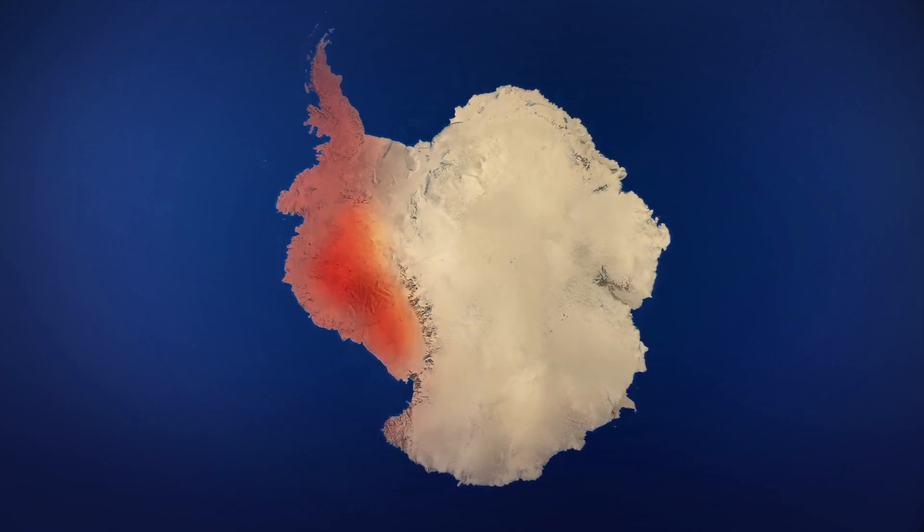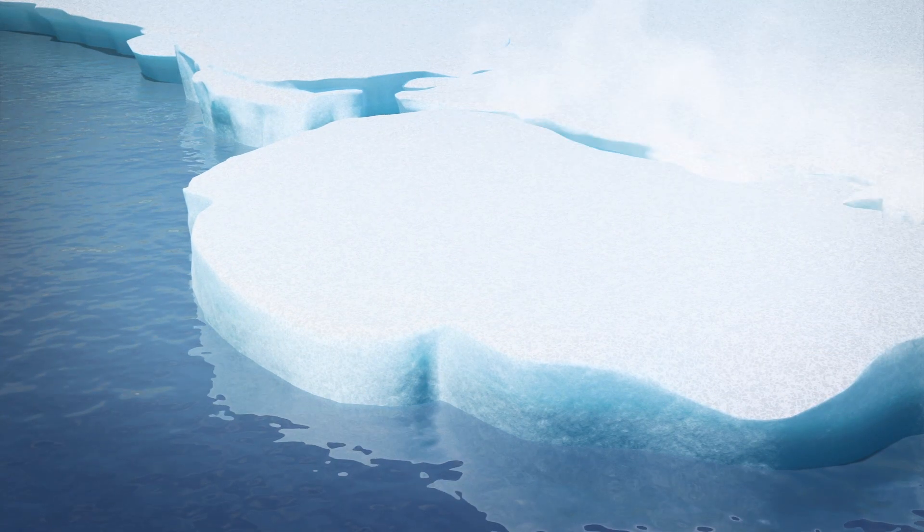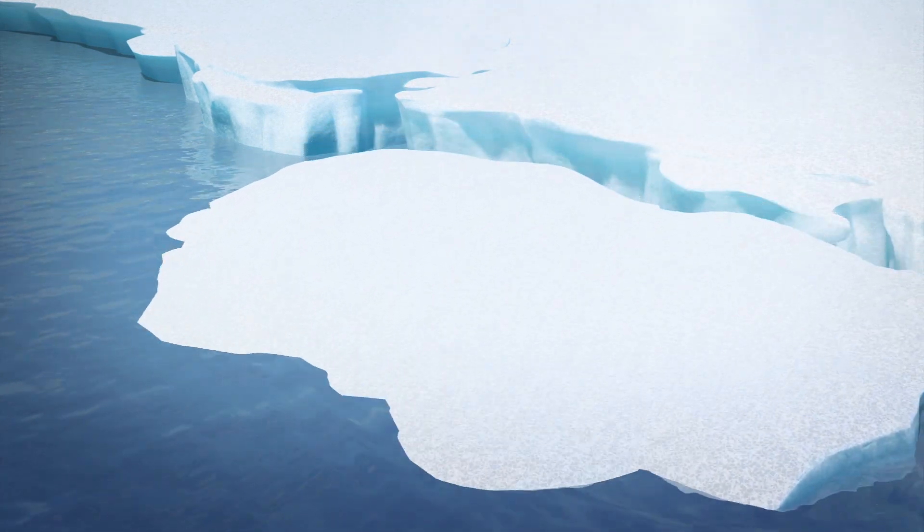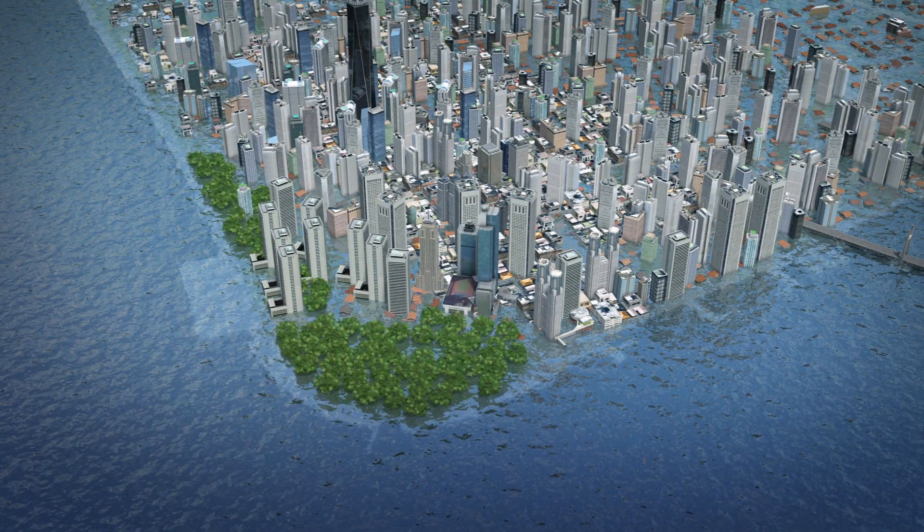According to Reuters, scientists believe the West Antarctic Ice Sheet is on course to disintegrate due to the effects of global warming. This would trigger a global sea level rise that would leave many coastal cities, such as New York, underwater.